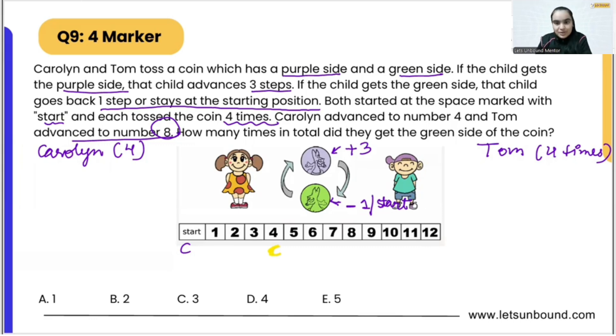Let's say Caroline got purple as the first toss, so that means she will jump three steps and she will be at number three. During the second toss, maybe she got green. That means we will go one step back. As the third time she again got green, that means again we will go one step back.